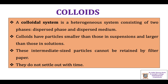A colloidal system is a heterogeneous system consisting of two phases. The first phase is the dispersed phase, which consists of colloid particles having diameter roughly in the range of 1 to 1000 nanometers. The second phase is called the dispersion medium, which consists of solvent molecules or the medium in which the colloidal particles are dispersed. Colloids have particles smaller than those in a suspension and larger than those in solutions, making colloids intermediate systems between a true solution and a suspension. These intermediate-sized particles cannot be retained by filter paper and do not settle out with time.